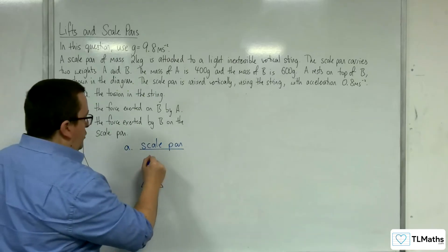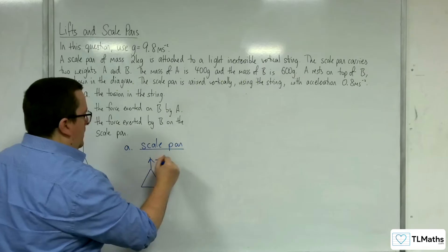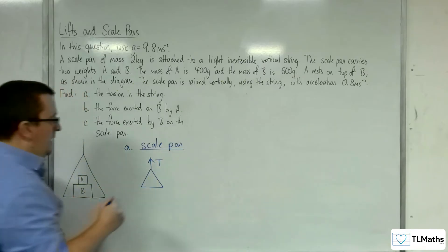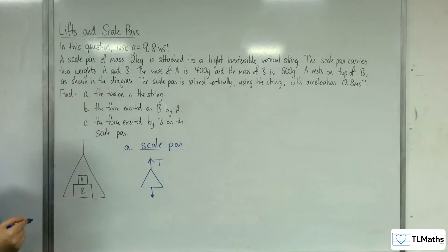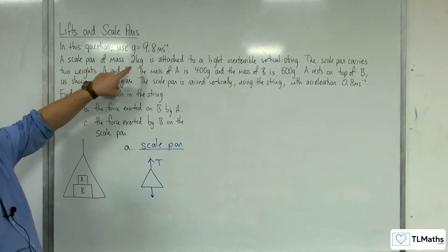There will be the tension in the string pulling it upwards. And we will have its weight working vertically downwards, which will be a combination of the mass of the scale pan, which is 2 kilos,